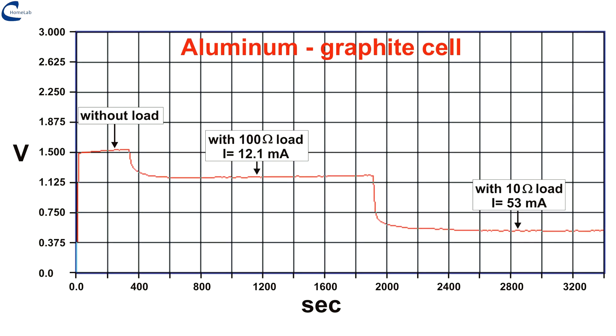With a load of 10 ohms, however, the cell provides 53 milliamperes, but the voltage has dropped to 0.53 volts. This voltage drop is due to the internal resistance of the graphite electrode which is around 10 ohms. We will see that it will go better with the other electrodes where the internal resistance is decidedly lower.